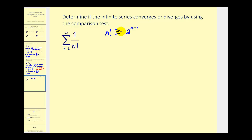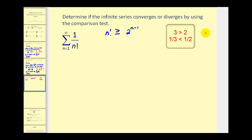If we take the reciprocal of both sides, we have to reverse the inequality. For example, if three is greater than or equal to two, taking the reciprocals gives one third and one half, and we'd have to reverse the inequality because one half is larger. So we can state that one over n factorial is less than or equal to one over two to the n minus one. We're going to use the series generated by this formula for the comparison test.